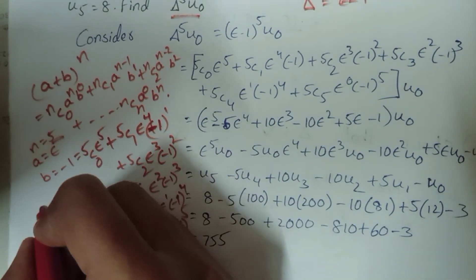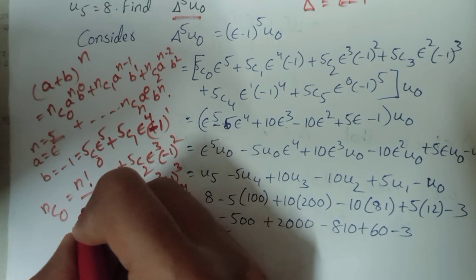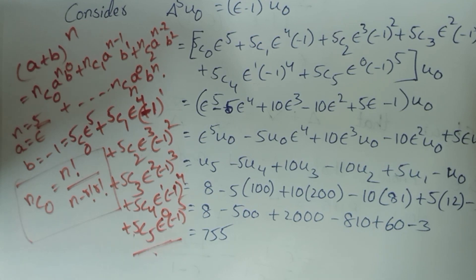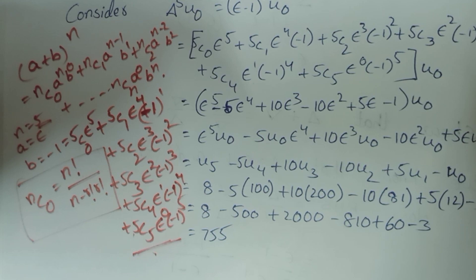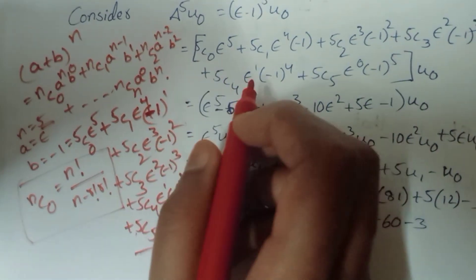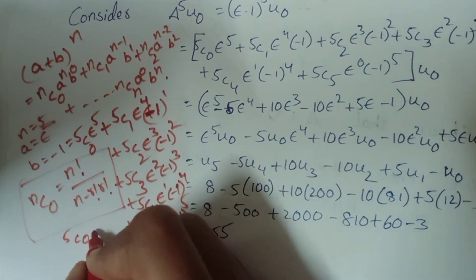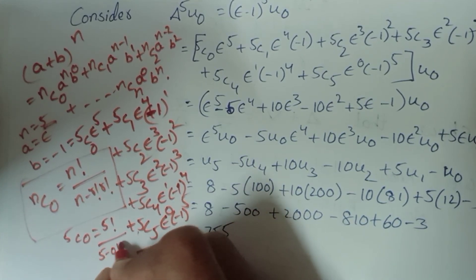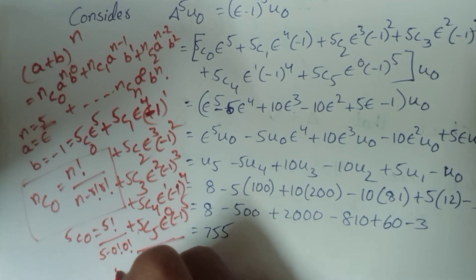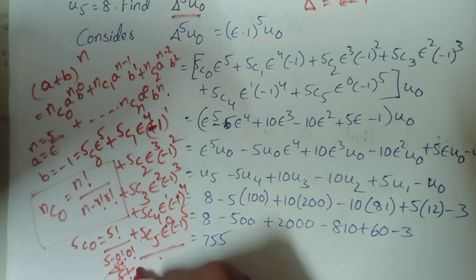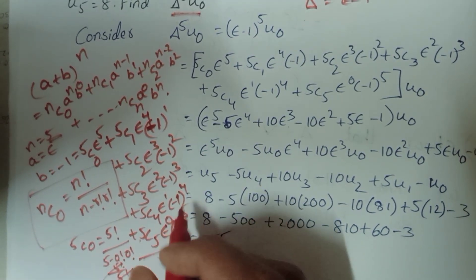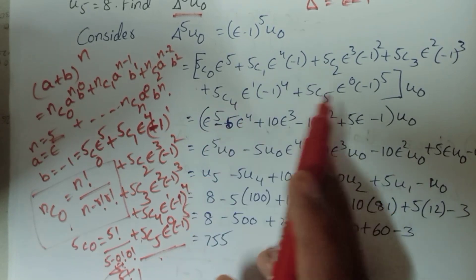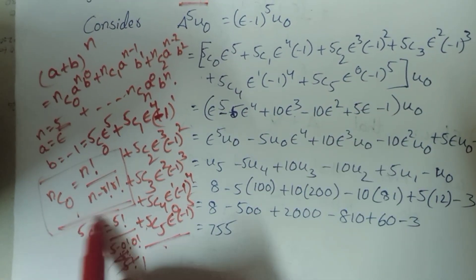The nCr formula is n factorial by (n minus r) factorial into r factorial. Here 5C0: n value is 5, r value is 0, so 5 factorial by (5 minus 0) factorial into 0 factorial. This formula is used to find 5C0, 5C1, 5C2, 5C3, 5C4, 5C5 values.